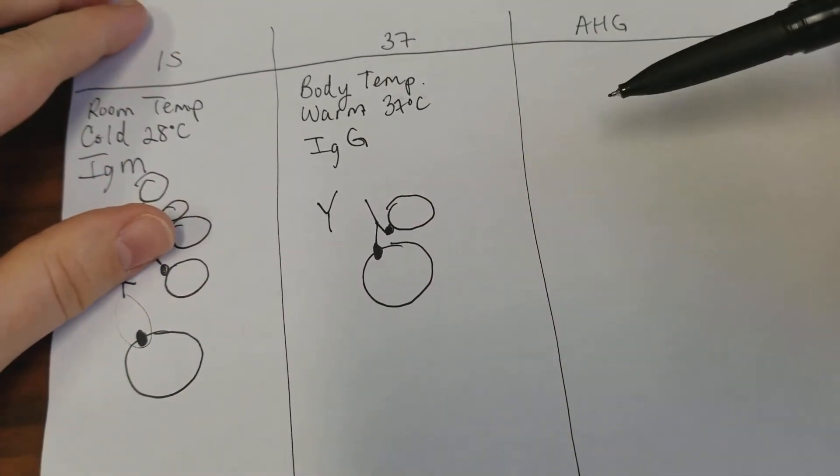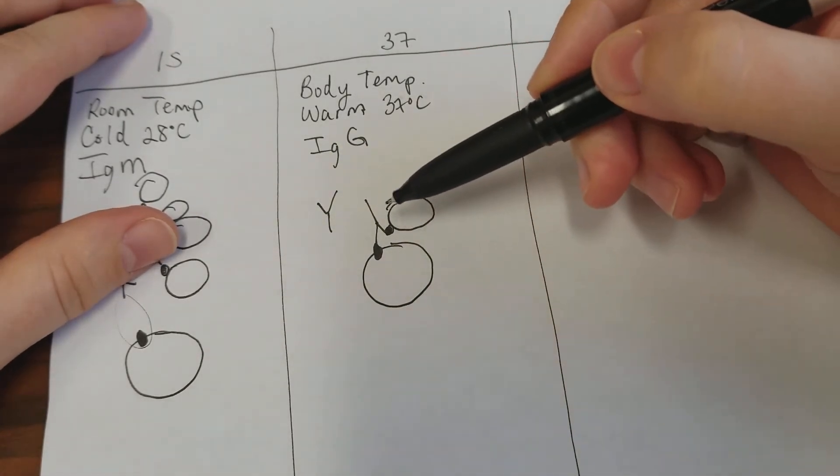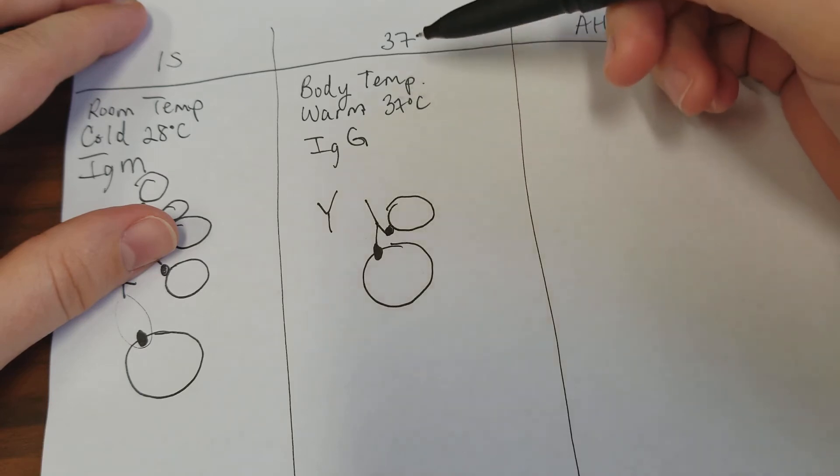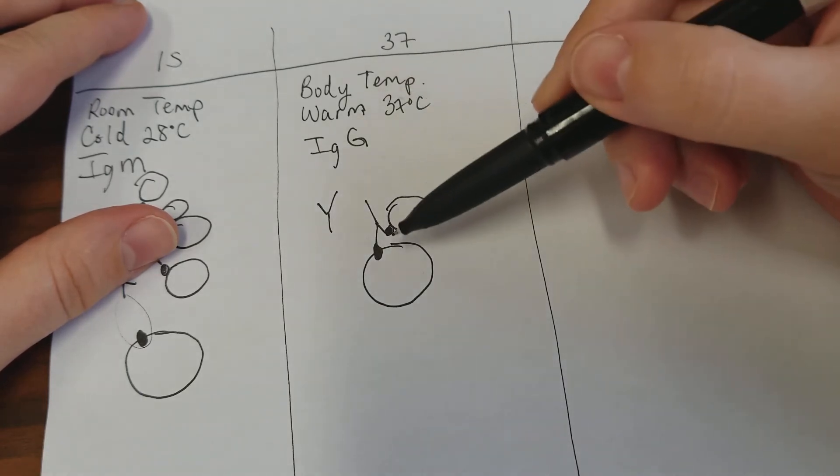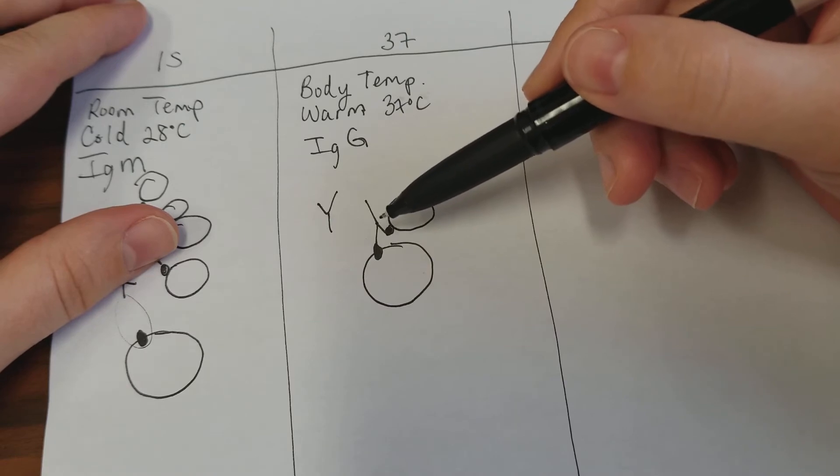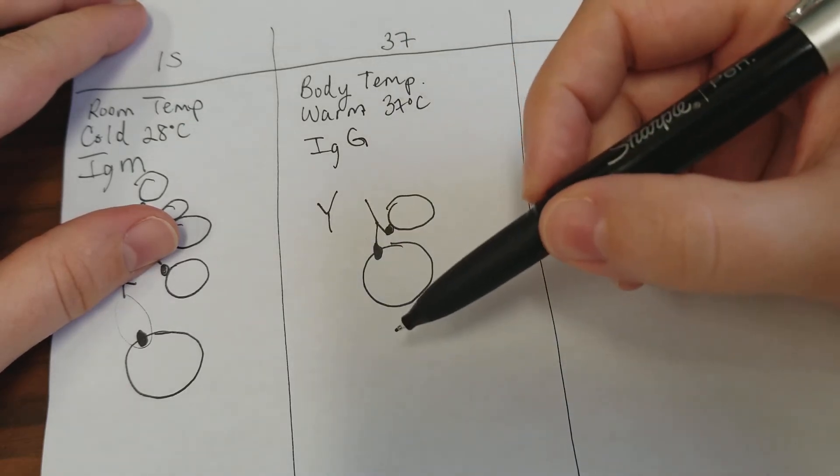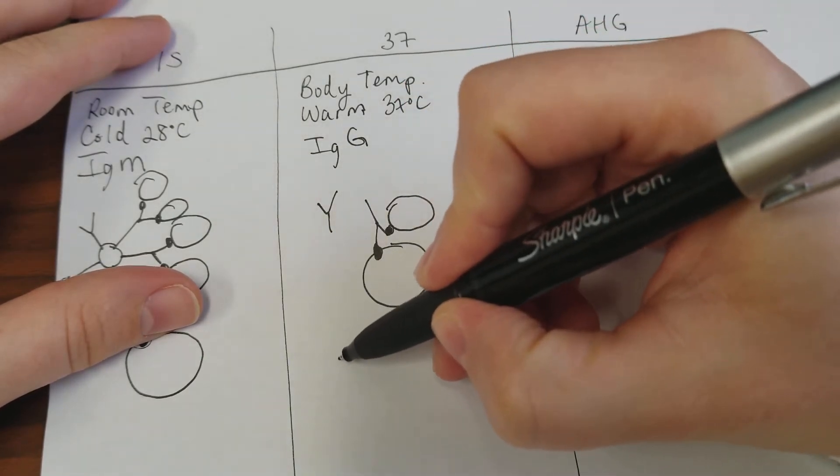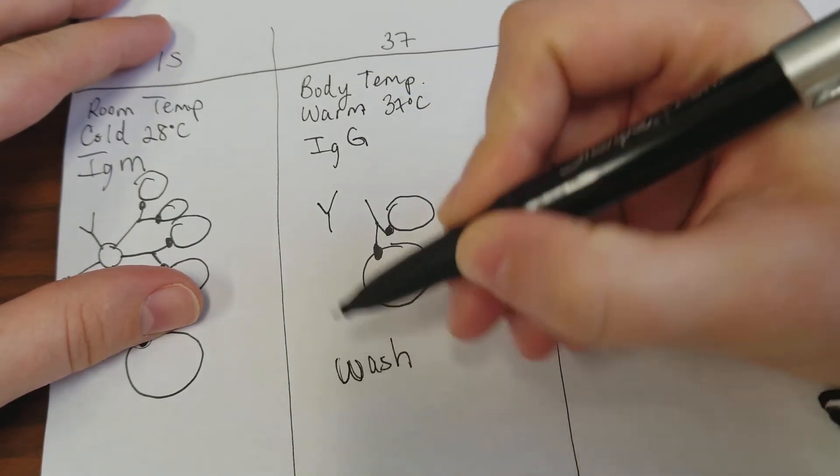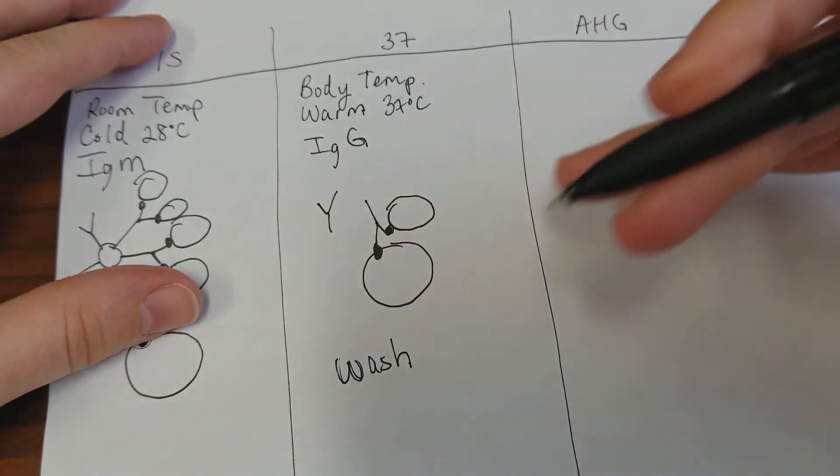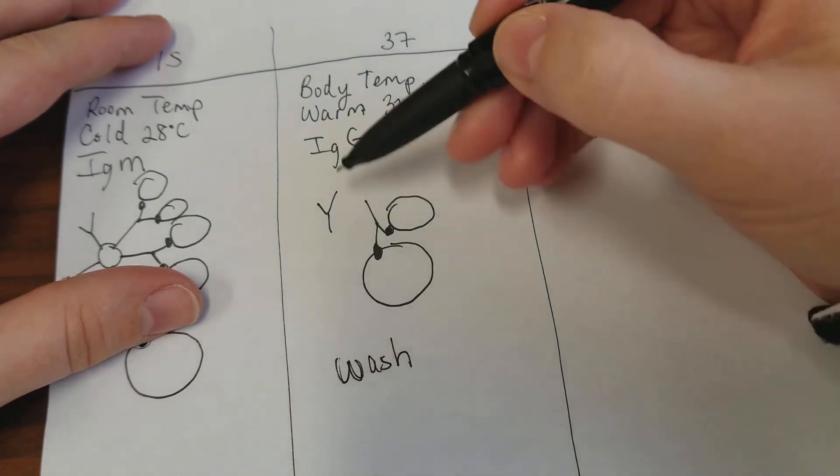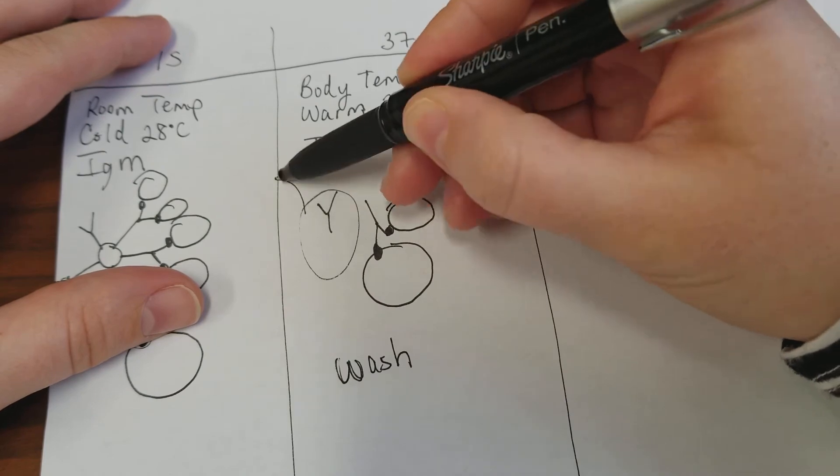Even though we may not see a large agglutination happening at the 37 phase because these guys are so small, we may still have it there and not know it. We want to have a wash step in there. We've explained these different phases in another video in regard to what's happening, but we'll just rehash it a little bit here. We're washing away any unbound antibody, so it goes away.